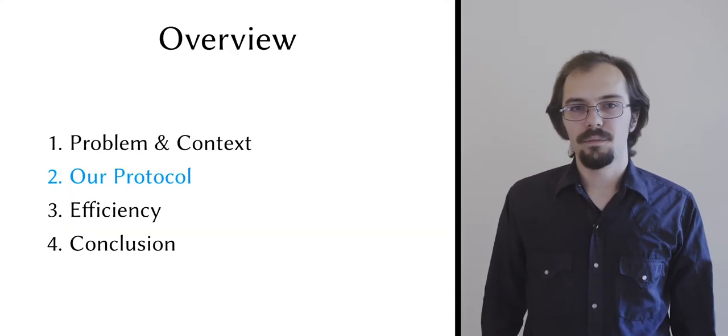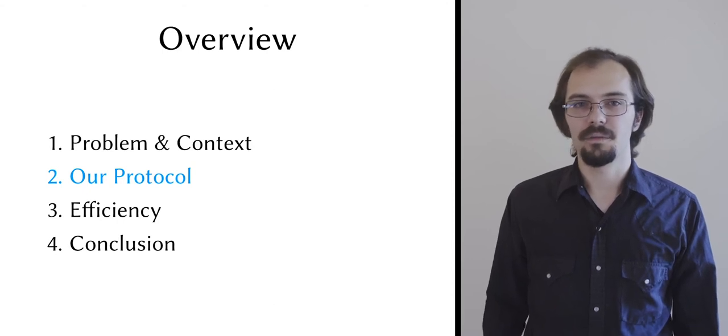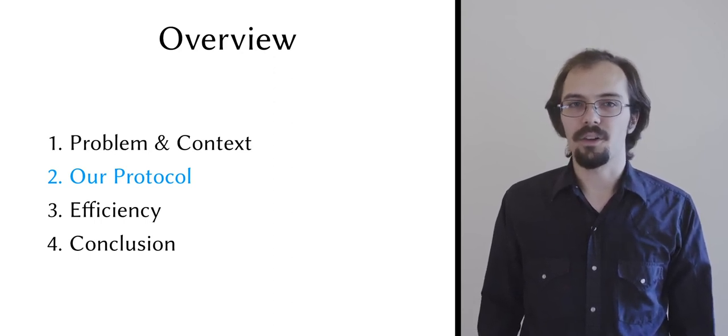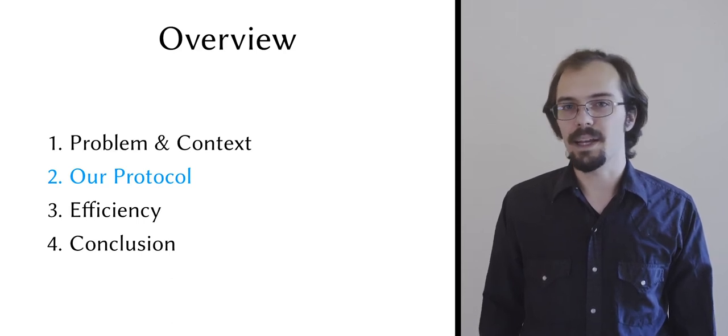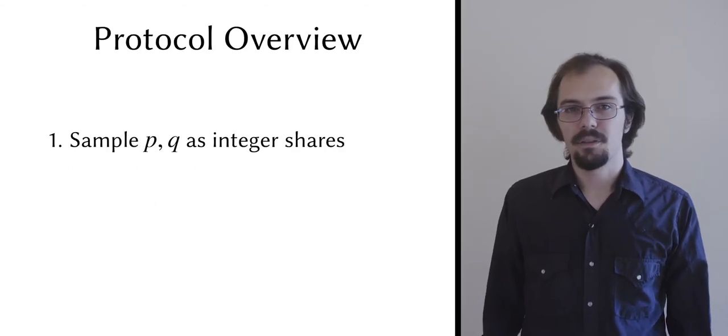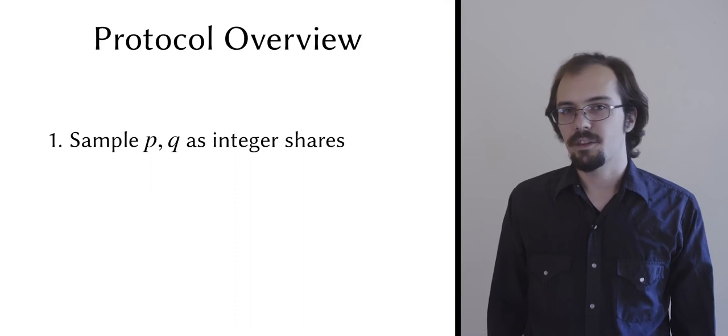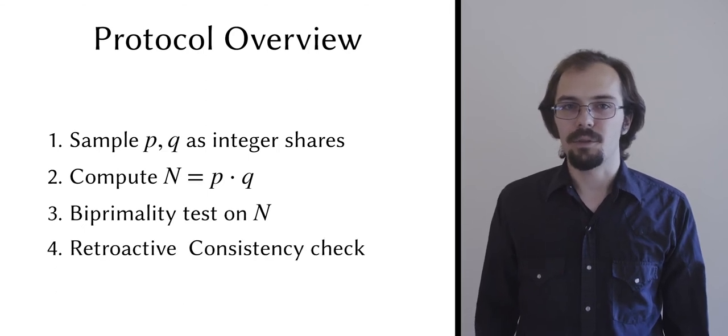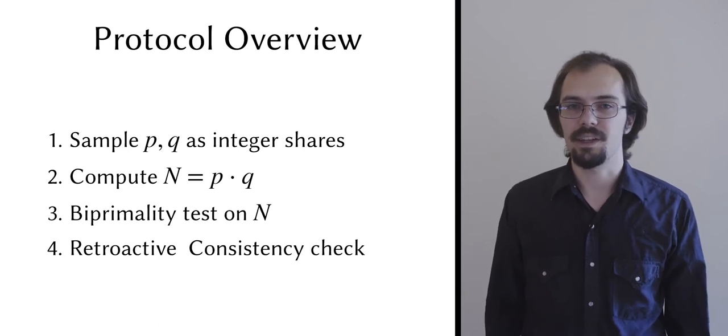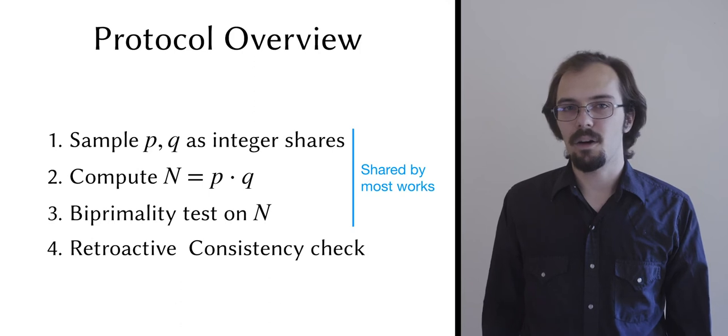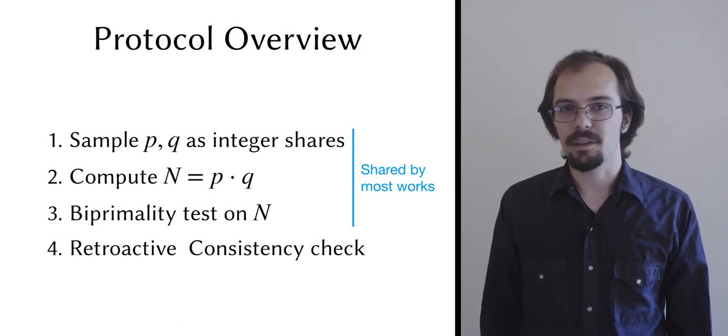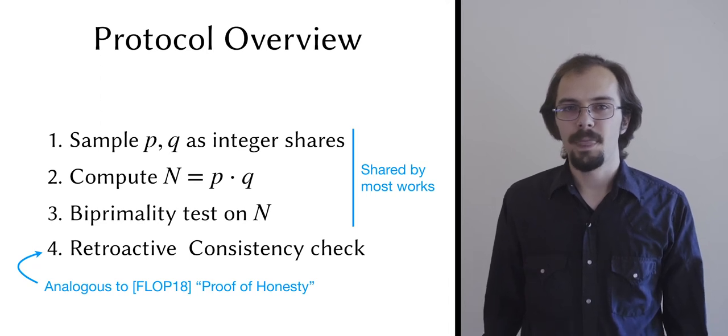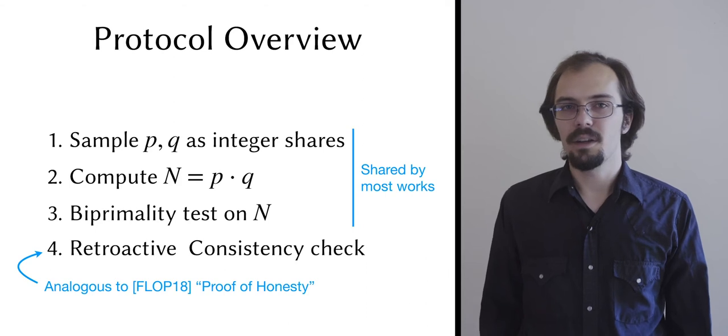So now we come to the protocol itself. For the sake of clarity and time, I'm going to explain a drastically simplified version. For the most part, I'll only talk about two parties, though hopefully you can imagine how everything can be generalized. I also won't always talk about how malicious security can be achieved, but I'll try to let you know where I make important omissions. Our protocol has a simple layout. First, it securely samples candidate factors p and q, then it securely multiplies those factors to produce a candidate biprime, which it subjects to the Boneh-Franklin biprimality test. And finally, it runs a retroactive consistency check to ensure no malicious behavior occurred during the previous phases. The first three parts of this layout are common among almost all biprime sampling protocols. They come from Boneh and Franklin. Our consistency check is new, but it can be thought of as somewhat analogous to the proof of honesty used by Frederickson et al. I'll talk about the techniques we use to implement each step of this layout in turn, starting with sampling.